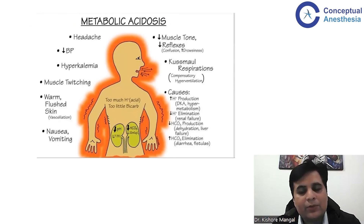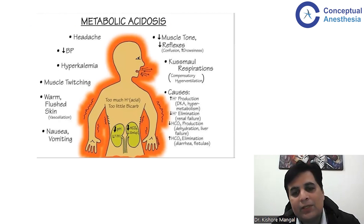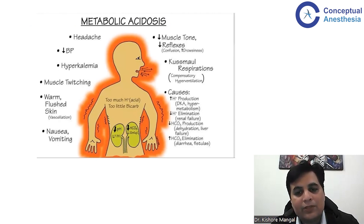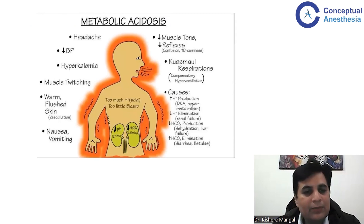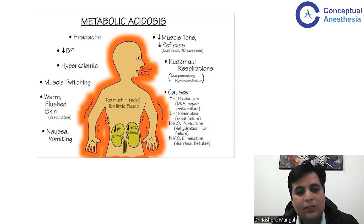In short, discussing the clinical picture: the patient will have decreased muscle tone, reduced reflexes, confusion, and drowsiness. The patient will have the classical Kussmaul respiration, which is because of the compensation response. There will be complaints of headache, hypotension, hyperkalemia, muscle twitching, nausea, and vomiting.